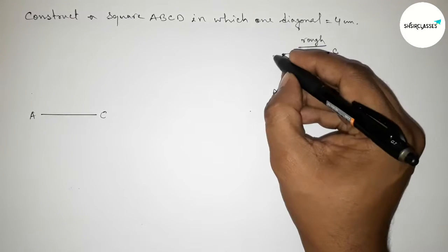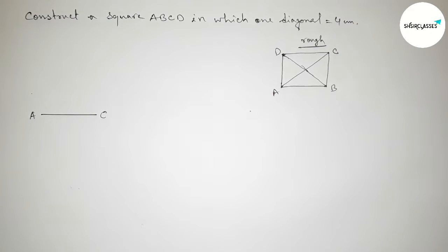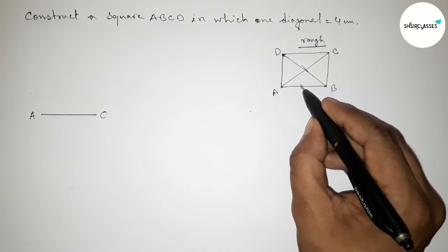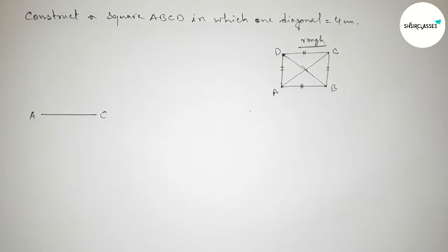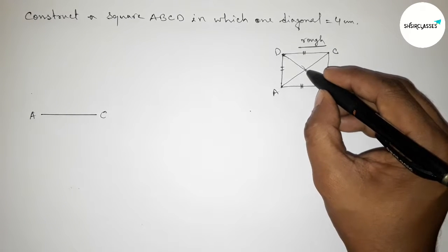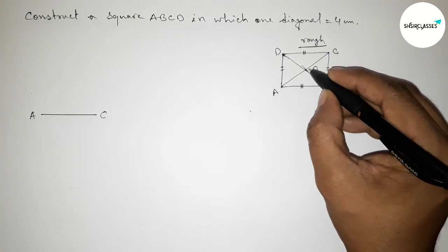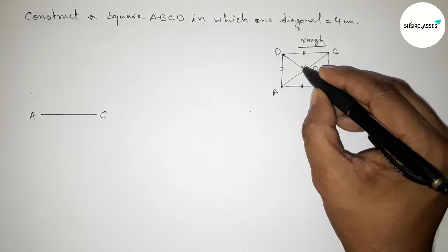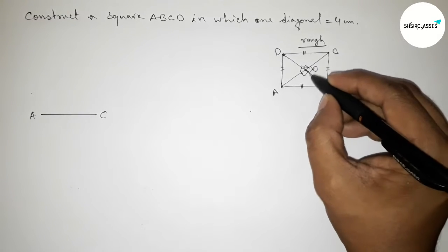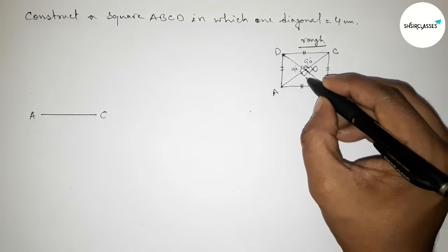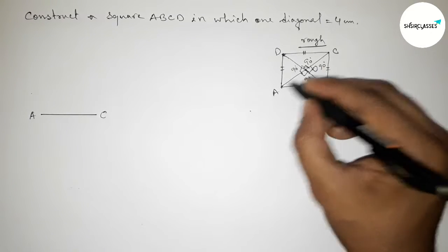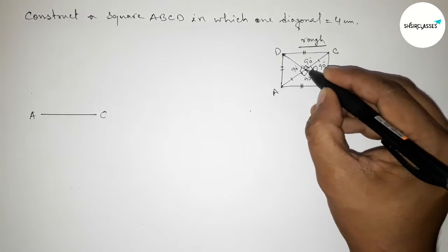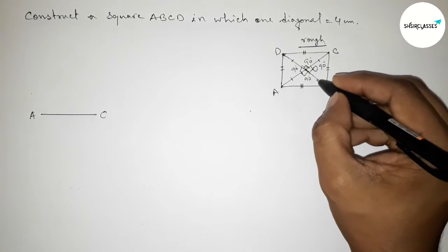Okay, so now taking here A, B, C, D. And here all the sides of this square are equal. Now the two diagonals intersect here at point O and intersect equally at 90 degrees. So all angles are 90 degrees. And we also know that the two diagonals bisect equally.